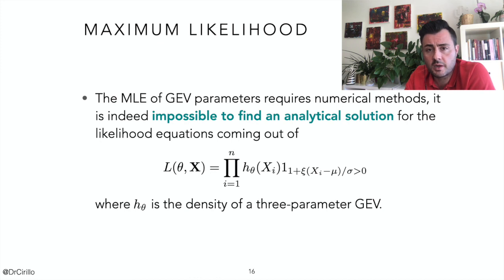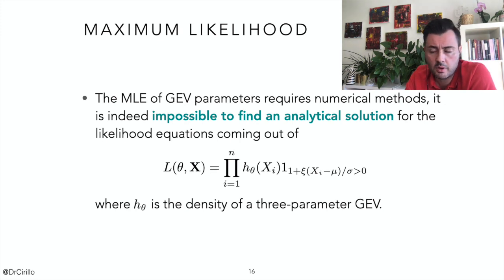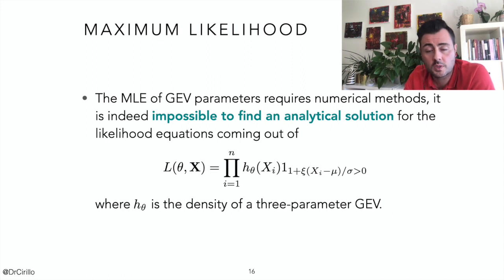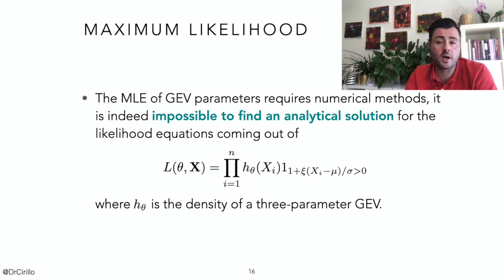When using maximum likelihood, the closed-form analytical solution for the GEV is not available, in particular when you rely on the three parameters. Numerical methods are obviously necessary. This is not a big deal, because in all the packages you may want to use to estimate the parameters of a GEV, you'll already find all implementations. Writing your own code is quite simple — it's just a matter of writing down the likelihood and maximizing it.